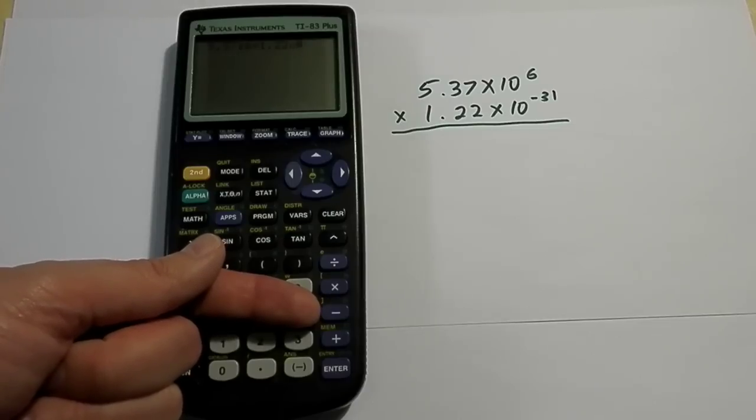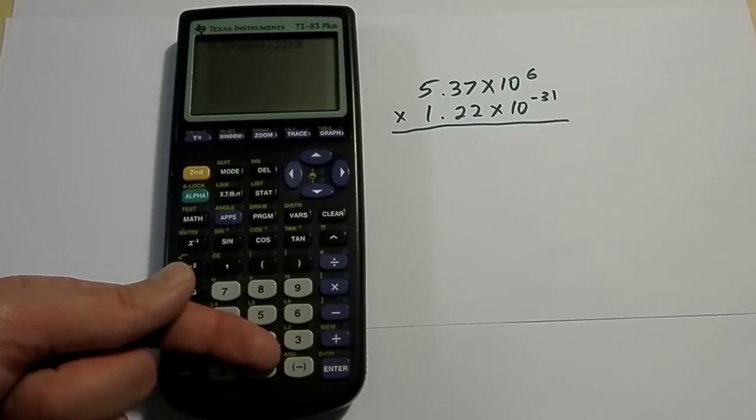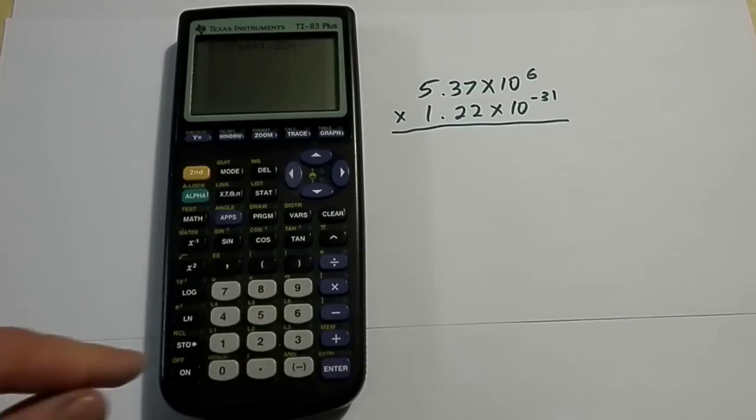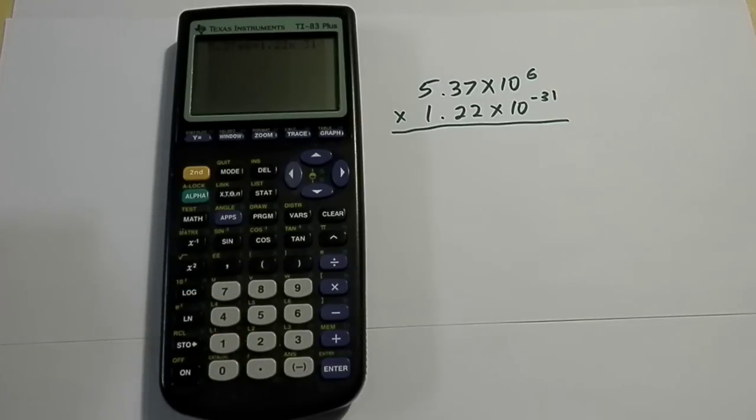The problem with that is this button is actually for doing subtraction. It's the actual mathematical operator of doing subtraction. And I don't want to do that. I want to put in a negative value, which means I should be using this button, which shows a negative sign inside brackets. That tells the calculator that I am doing a negative number and in this case to the power of negative 31.